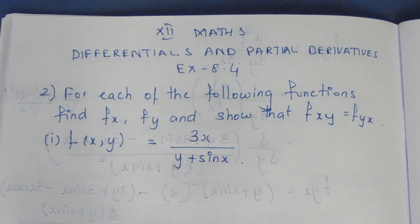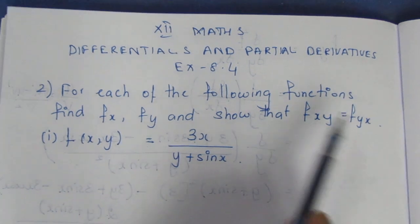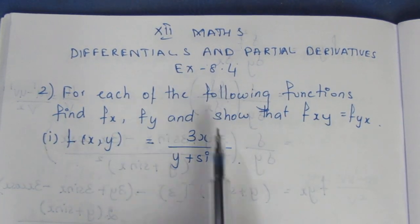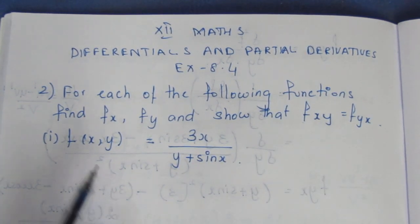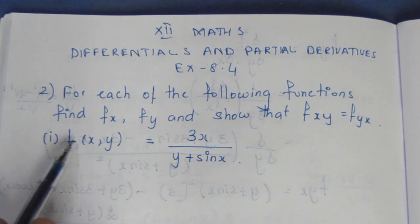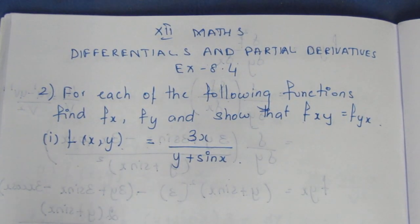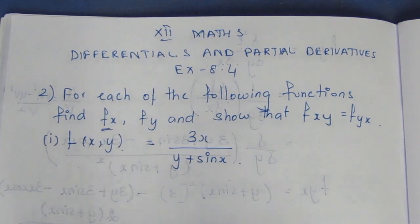Hello viewers, I am Ikely. In 12th max differentials and partial derivatives, exercise 8.4, second sum. The question: for each of the following functions, find f of x, f of y, and show that f_xy equals f_yx. The first function is f(x, y) equals 3x divided by (y plus sin x). First, find f of x.